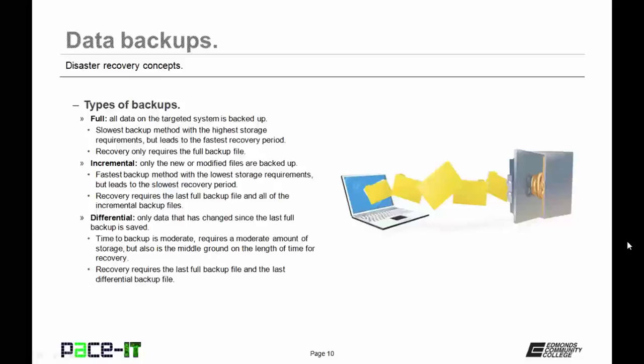Then there are incremental backups. Only new or modified files are backed up. This is the fastest backup method with the lowest storage requirements, but it leads to the slowest recovery period. When using incremental backups, the recovery process requires that the last full backup file is used and all of the incremental backups since that last full backup.